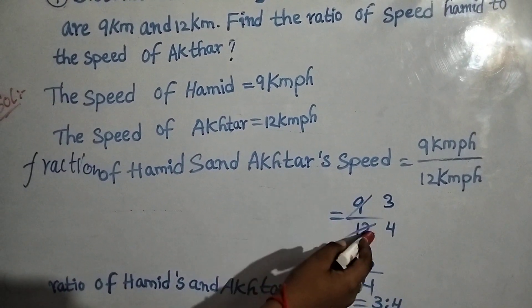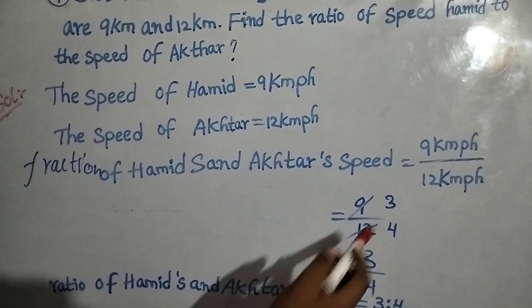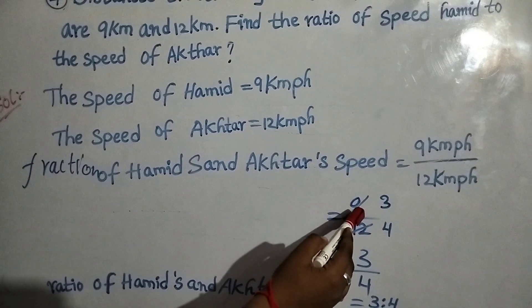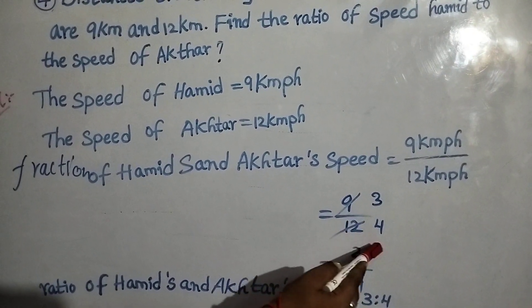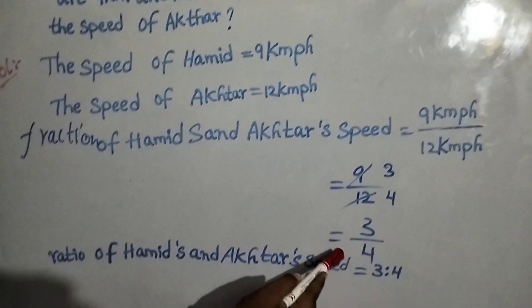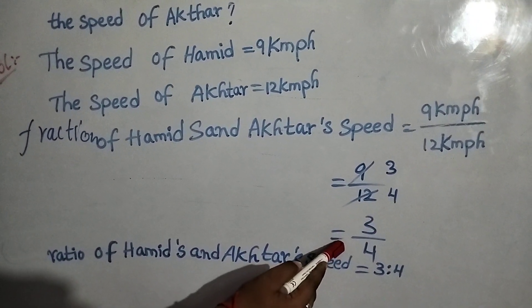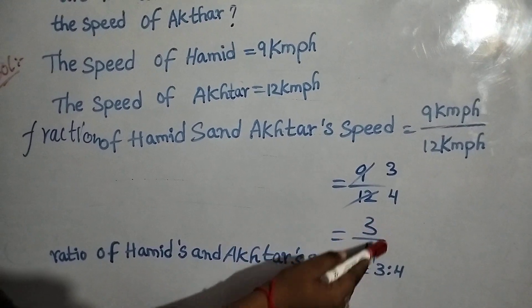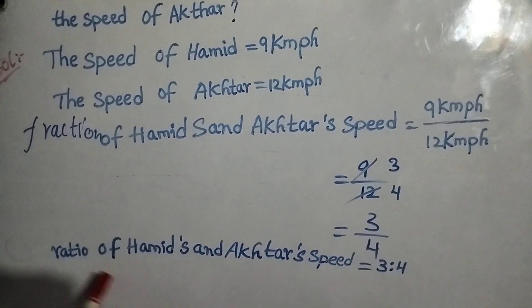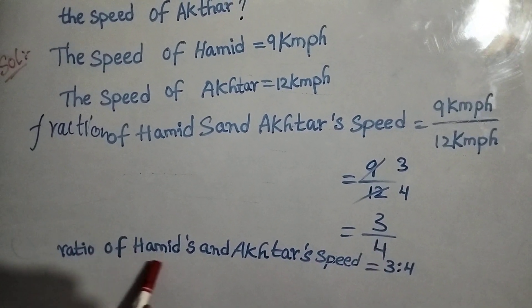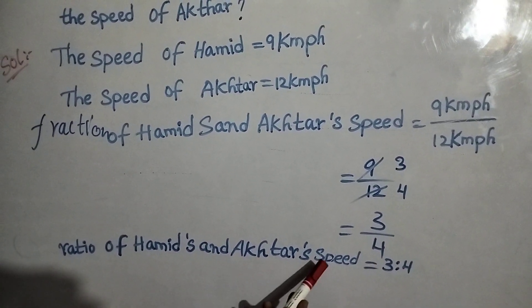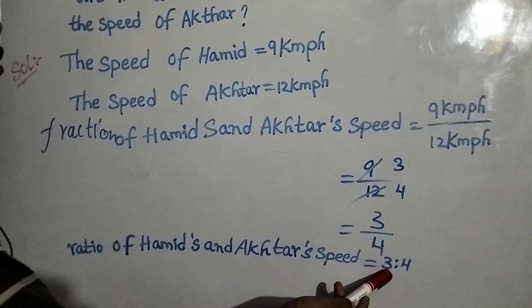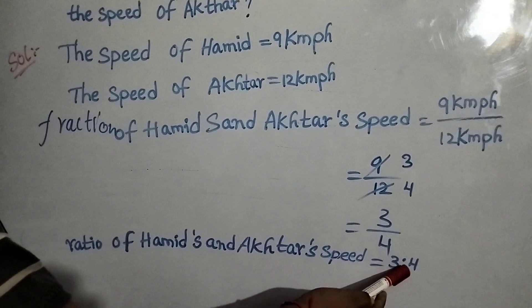Using the 3 times table, both numbers cancel. The 9 cancels 3 times and 12 cancels 4 times, giving us 3 by 4. So the ratio of Hamid's and Akhtar's speed is equal to 3 is to 4.